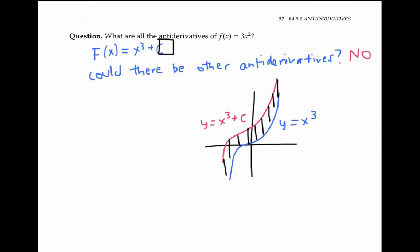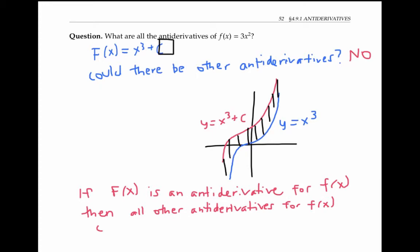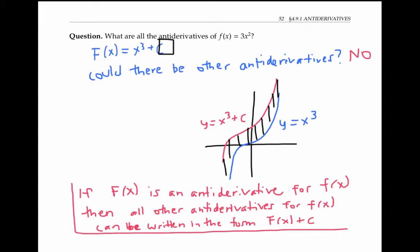In general, if capital F of x is an antiderivative for little f of x, then all other antiderivatives can be written in the form capital F of x plus C for some constant C. A more rigorous justification of this fact can be proved using the mean value theorem, as I'll do in a separate video.